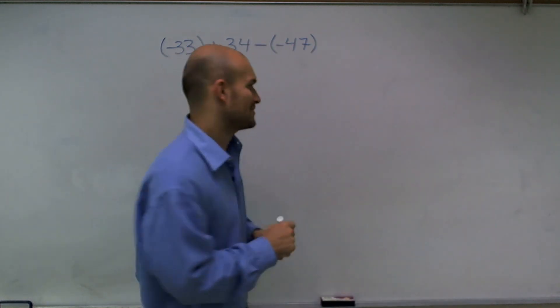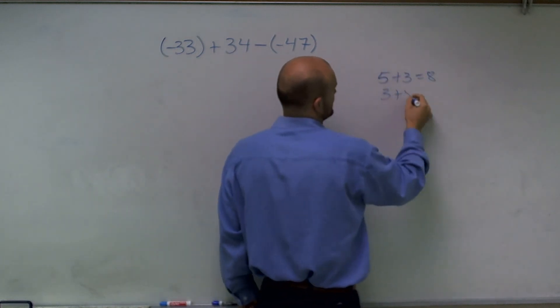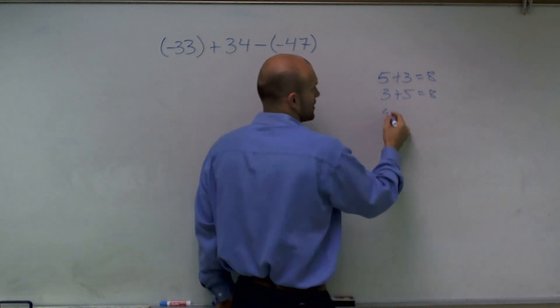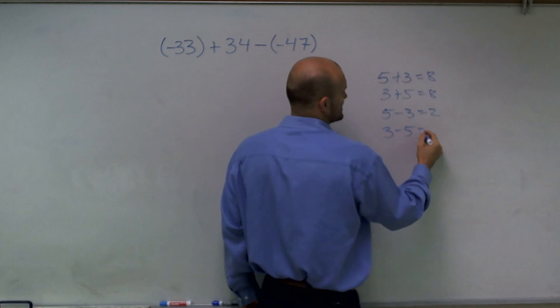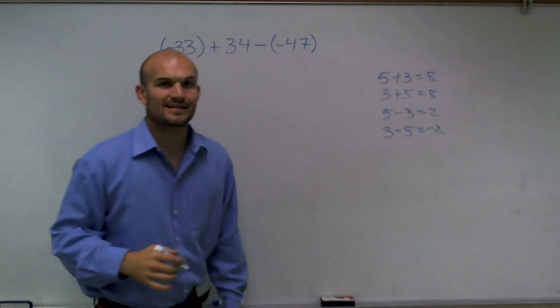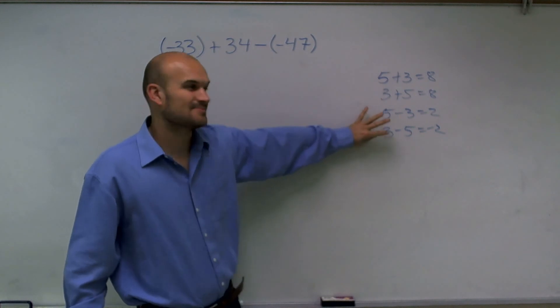Did I lose you? Let me go and write it down. We know that 5 plus 3 is equal to 8 and 3 plus 5 is equal to 8. But 5 minus 3 is equal to 2 and 3 minus 5 is equal to negative 2. So here order doesn't matter, but for subtraction it does matter.